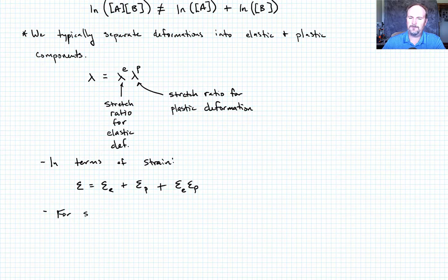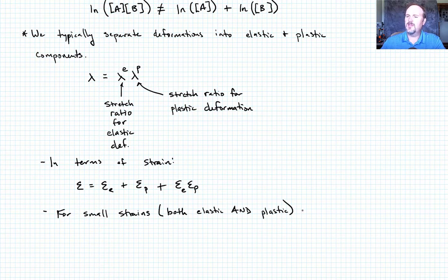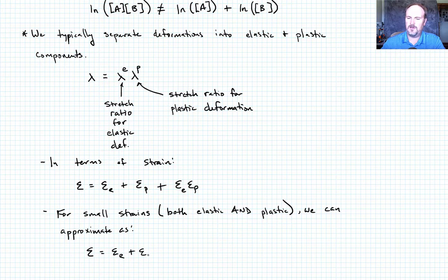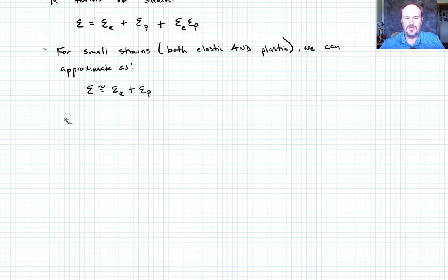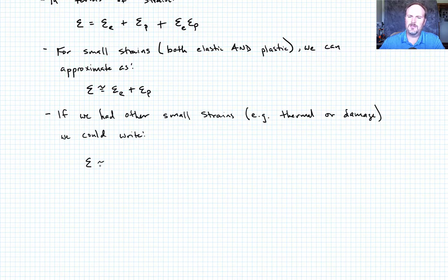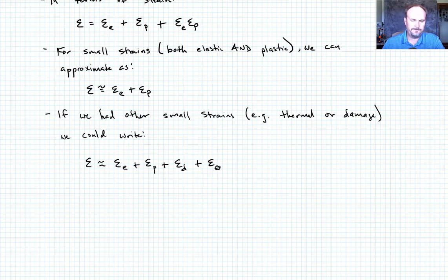For small strains — and I mean both elastic and plastic — we can approximate that as: total strain equals elastic strain plus plastic strain. That's an approximation. If we had other strains besides elastic and plastic — remember plastic is an eigenstrain, and elastic is the strain that drives the stress — there are potential other options. Maybe we have thermal strains, maybe we have strains due to damage. We could write all of those in a similar fashion as long as they constitute small strains: an additive decomposition where total strain approximately equals elastic strain plus plastic strain plus strain due to damage plus strain due to thermal expansion, which we call epsilon theta.